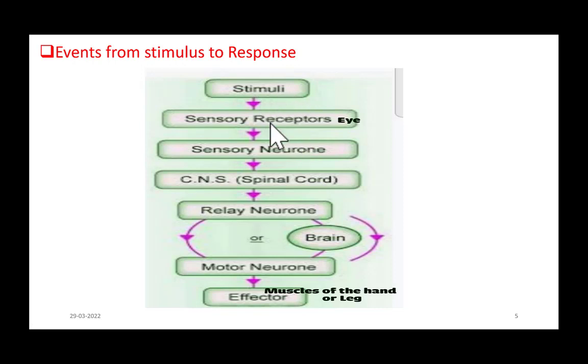So, stimulus goes first to sense organs, then to sensory neurons. Sensory neurons are sensory nerve cells. Then to spinal cord where information is analyzed and integrated.